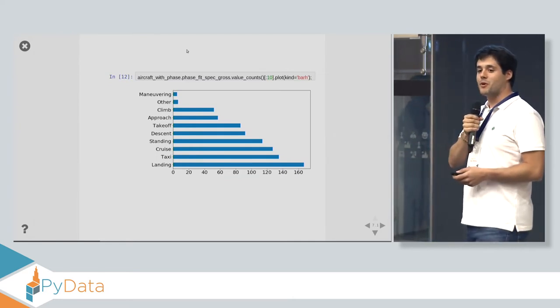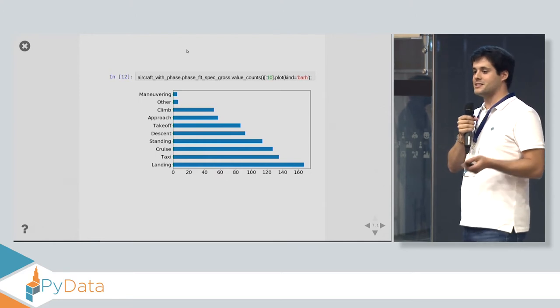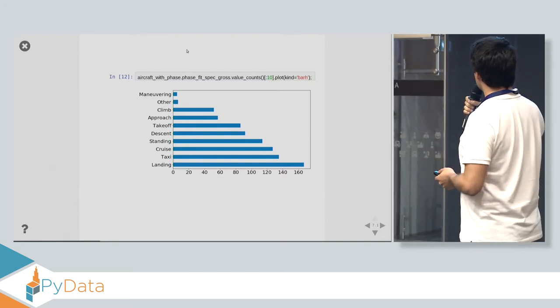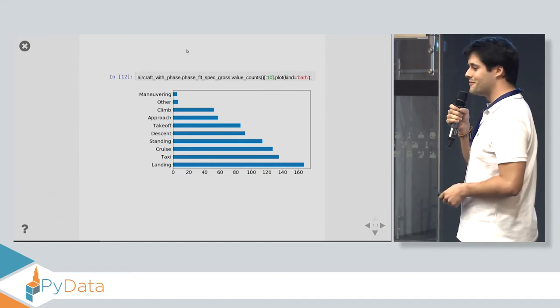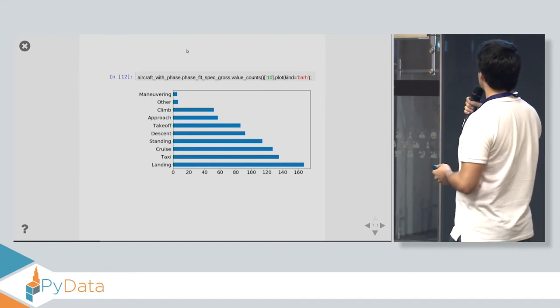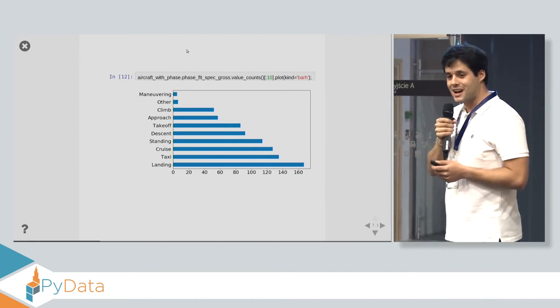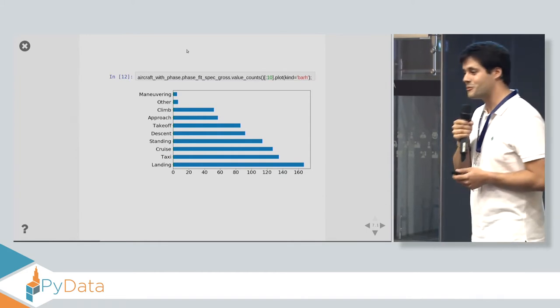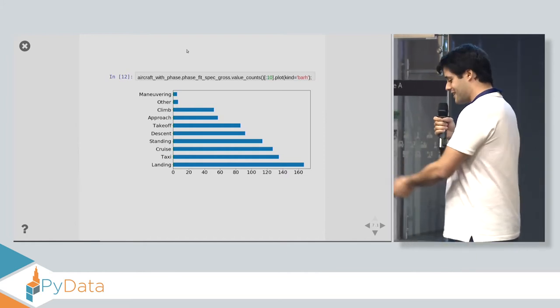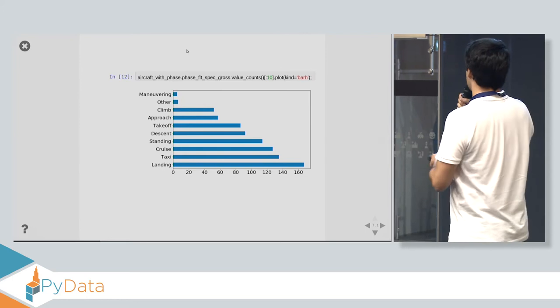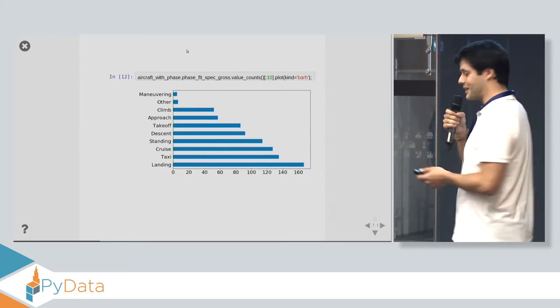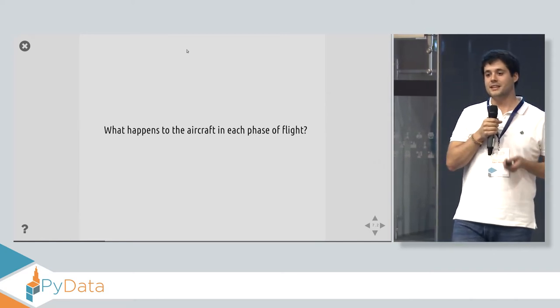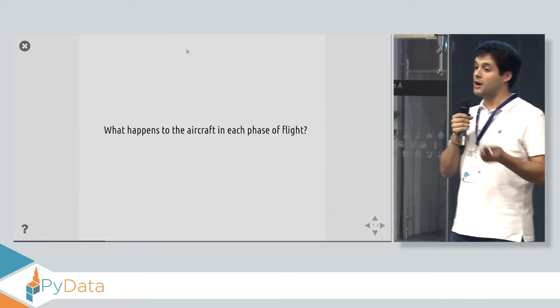So, which one do you think is the safest? And which one do you think has most events? I think that if you had answered me, probably taking off and landing are the phases that we are scared the most. How about them? That's right. There's landing. We can see also take off up there. And we have cruise right there. But for us, also the surprise was to find taxi and standing. That means the aircraft, which can go really fast and really high, when it's on the ground, it has a lot of events. And also when it's stopped.